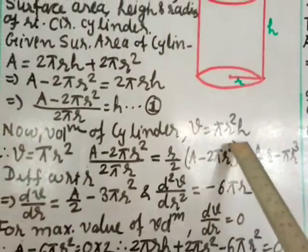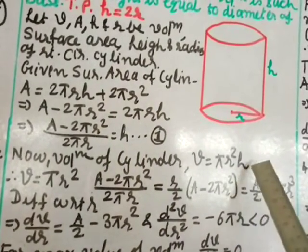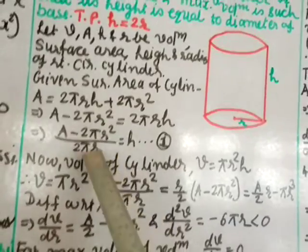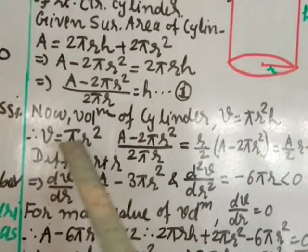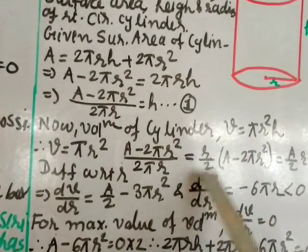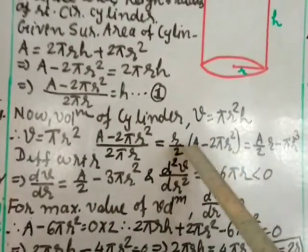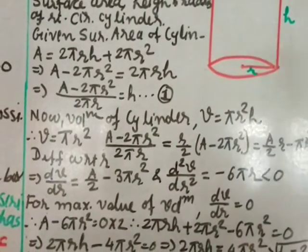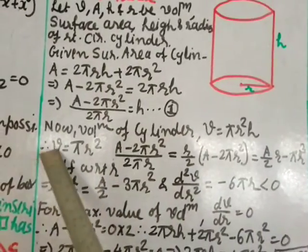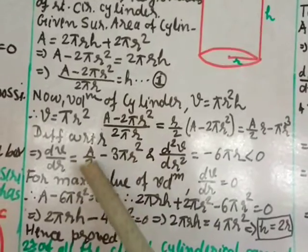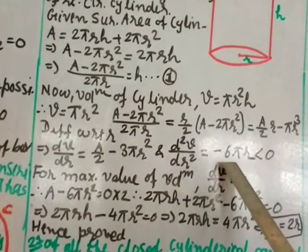Volume of cylinder V = πr squared times h. Substituting h from equation 1: V = πr squared times (A minus 2πr squared)/(2πr). After cancellation, V = (r/2)(A minus 2πr squared) = Ar/2 minus πr cubed. Differentiating with respect to r: dV/dr = A/2 minus 3πr squared.